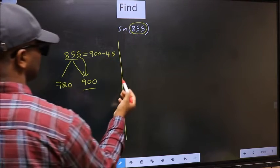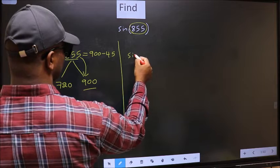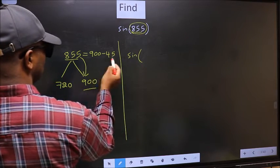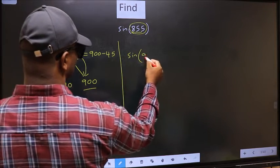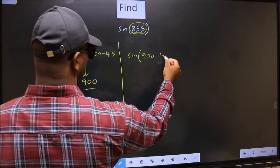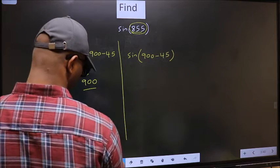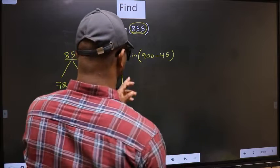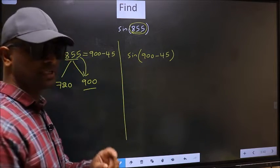So, this will become sin. In place of 855, now we write 900 minus 45. This is your step 1.